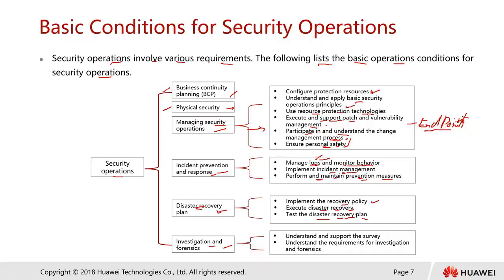For investigation and forensics, you need to understand and support the survey and requirements for investigation. For example, if one of the machines has been attacked by a hacker and some information has been stolen, it is just like an ordinary crime scene — some things you are not supposed to touch. You may want to hire an expert to come over and scan through all your equipment. If the equipment has been touched by somebody, they may need to do some fingerprint scanning — I'm referring to real fingerprint scanning.